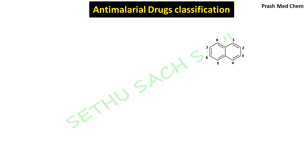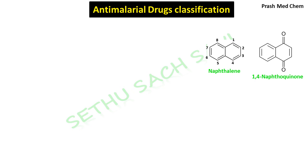Next, you will be quite familiar with the structure where two benzene rings are fused together — yes, this is the naphthalene ring. If you attach a double-bond oxygen group at the first and fourth positions of naphthalene, it is called 1,4-naphthoquinone. Atovaquone is a 1,4-naphthoquinone derivative having anti-malarial action.